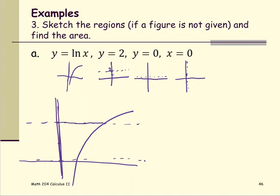With all four pieces in one graph, you can see that the bounded region is within quadrant one.